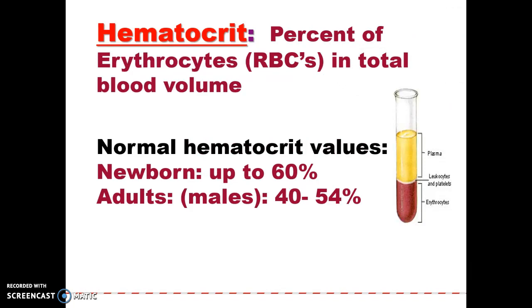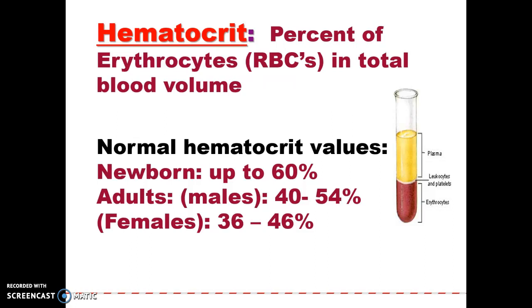Newborns have a high hematocrit — they're sucking in oxygen, growing fast, and have thicker blood. Males tend to have a slightly higher hematocrit than females, mainly because adult females lose quite a bit of red blood cells once a month, so they're trying to keep up. Plus, males on average tend to be more active — not always, but tend to be.